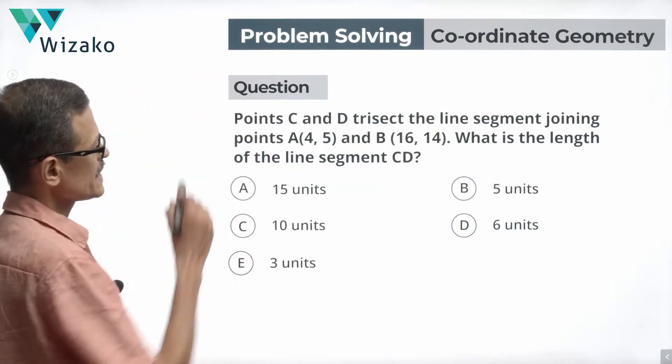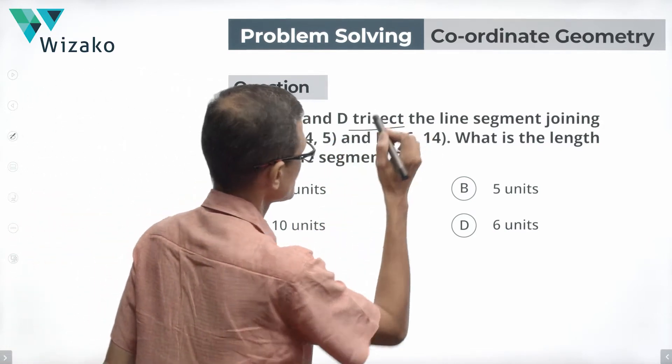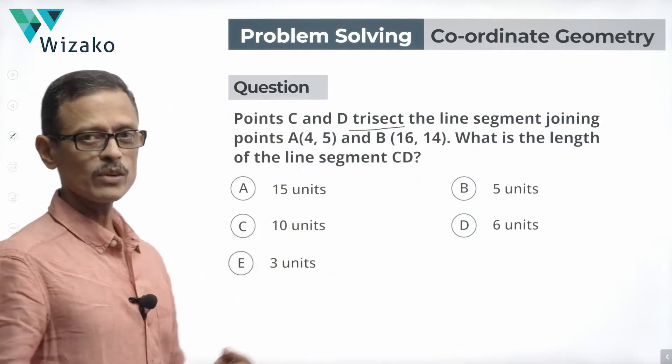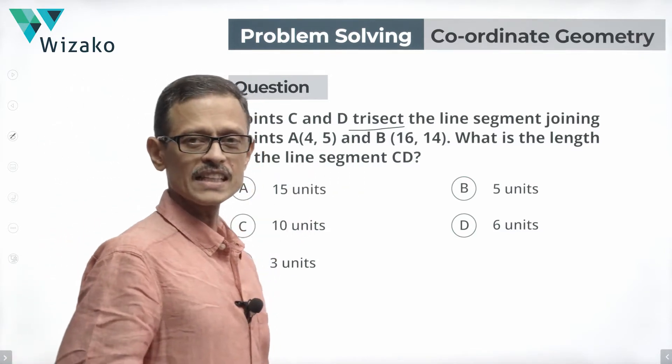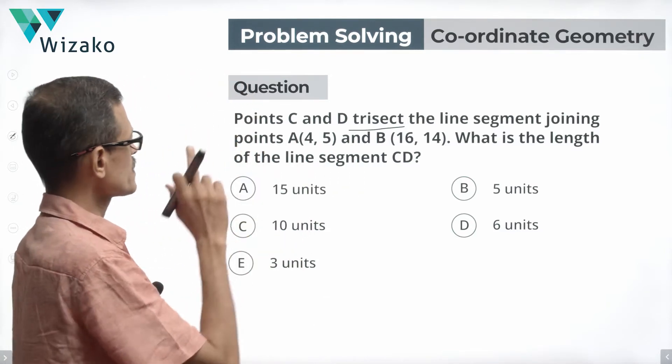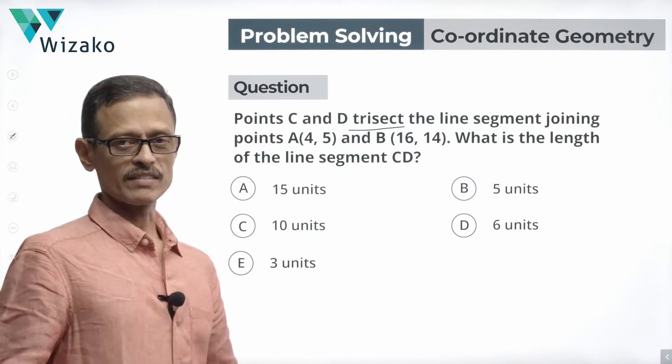Let's take a look at the question. Points C and D trisect the line segment joining points A whose coordinates are 4,5 and B whose coordinates are 16,14. What is the length of the line segment CD?